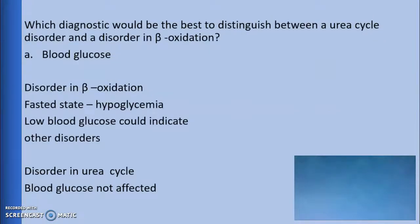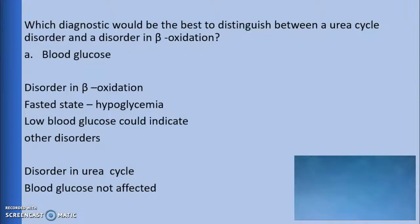The first part of this question asks us to identify which diagnostic test would best help us to distinguish between a urea cycle disorder and a disorder in beta-oxidation. The first choice is blood glucose. We know that the baby is in the fasted state and is experiencing hypoglycemia. This test can identify a potential disorder in beta-oxidation. However, there are other disorders that can lead to hypoglycemia, and urea cycle disorders do not affect blood glucose, so this would not be the best test.